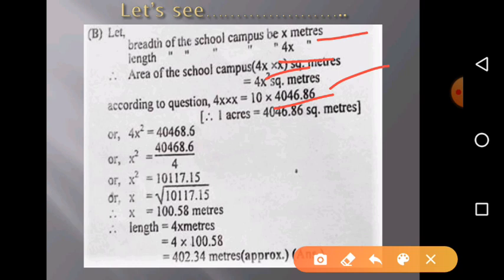After dividing 4x² by 4, we will get x² = 40468.6/4 = 10117.15. As this is x squared, we take the square root. After taking the square root, we will get x = 100.58 meters. So the length is 4x meters, which equals 4 × 100.58 = 402.34 meters approximately.